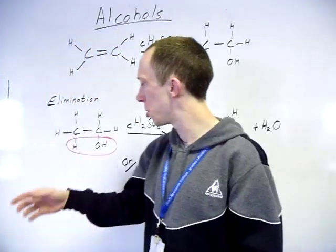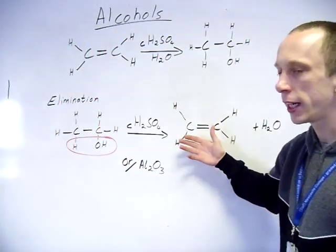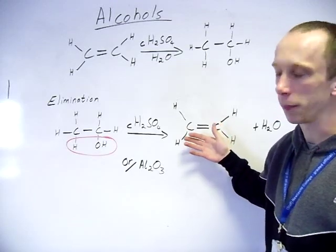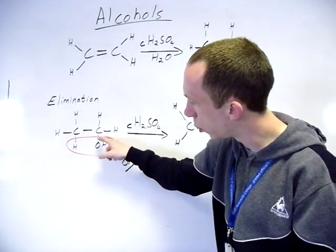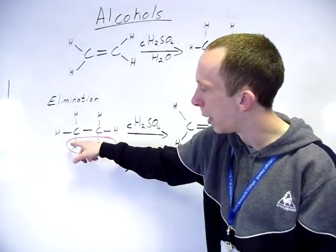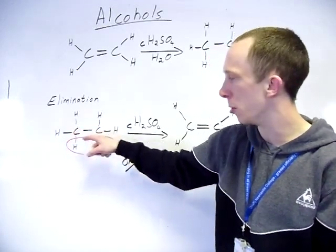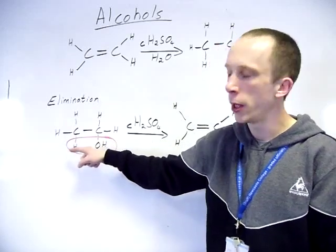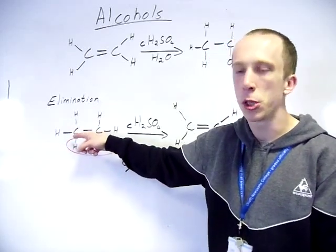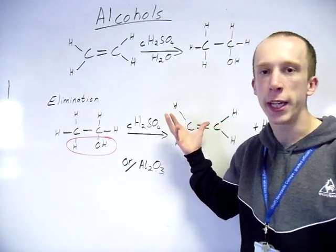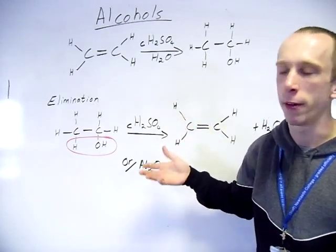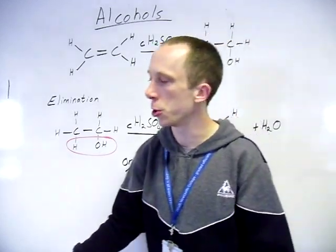Now in terms of this product here, starting from ethanol we can only get ethene, because as you can see the OH coming off this carbon pulls off a hydrogen from an adjacent carbon - so not the same carbon, an adjacent one. There is only one adjacent carbon in this, so we will only get one product. However, if you've got longer chains, as we'll show...